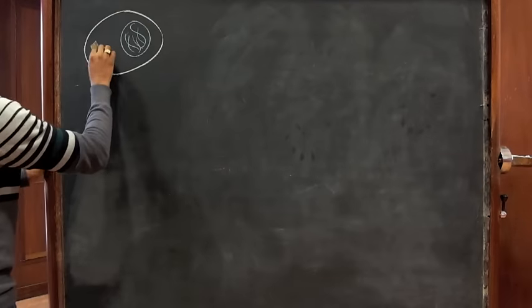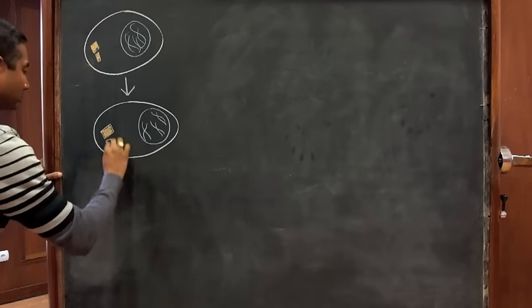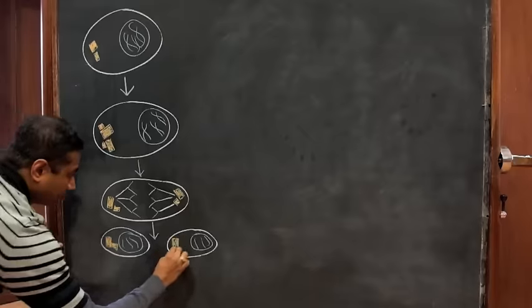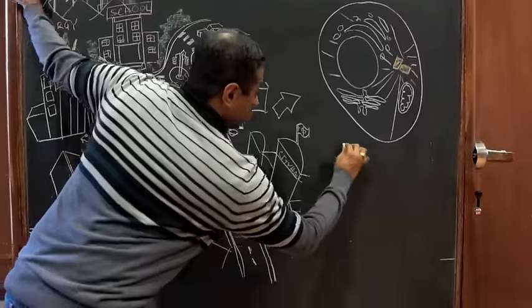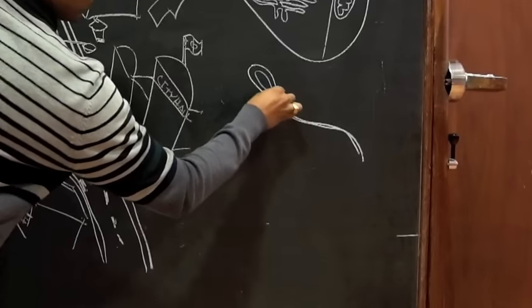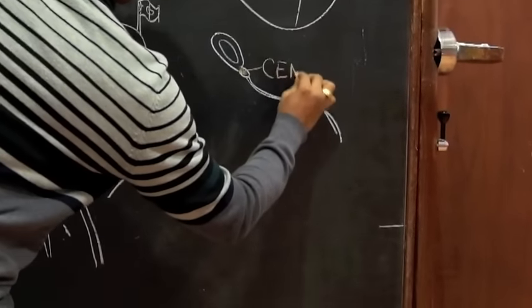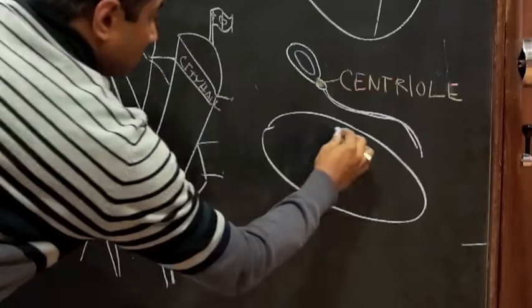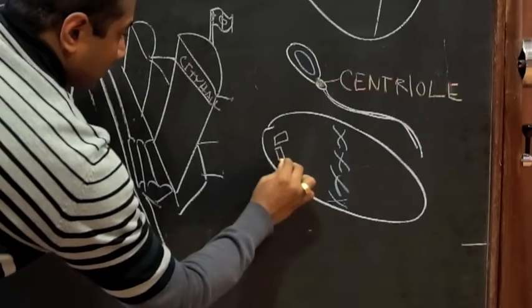When cells divide, those structures have to multiply so that new cells are fully equipped. Among those structures are the centrioles, essential for the functioning of cilia present in some cells like sperm or for the formation of structures involved in the distribution of chromosomes during cell division.